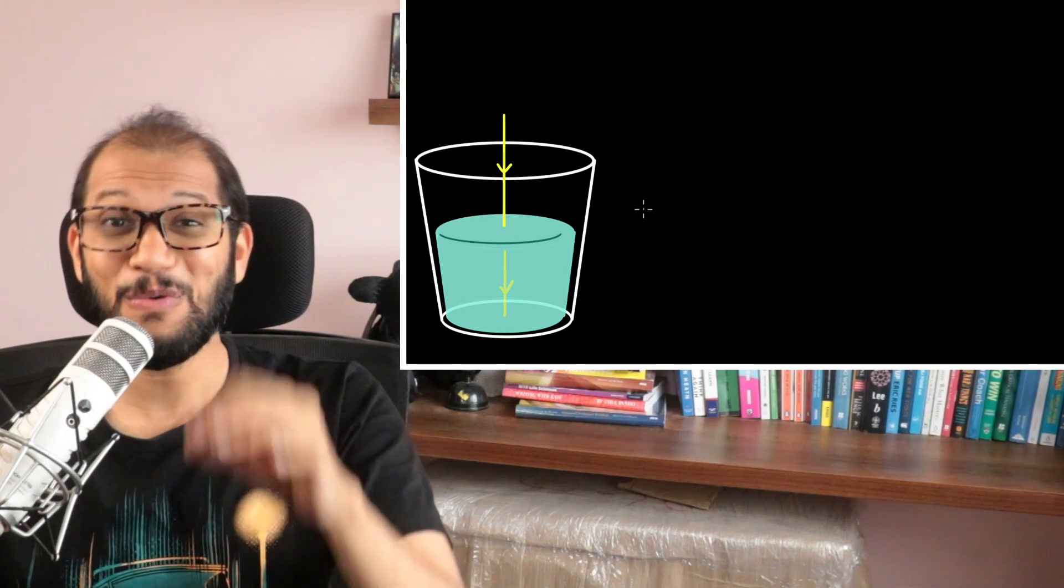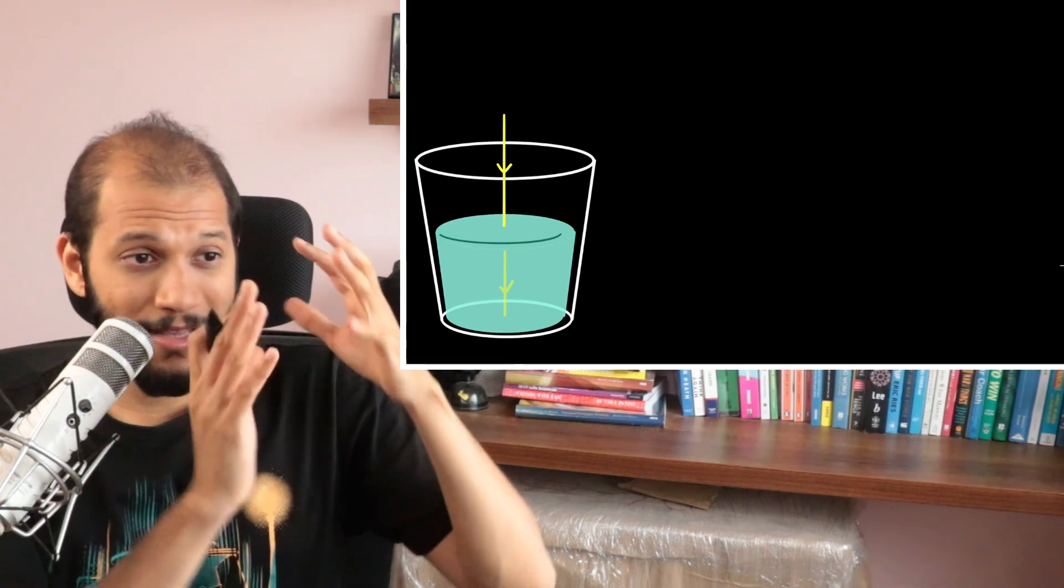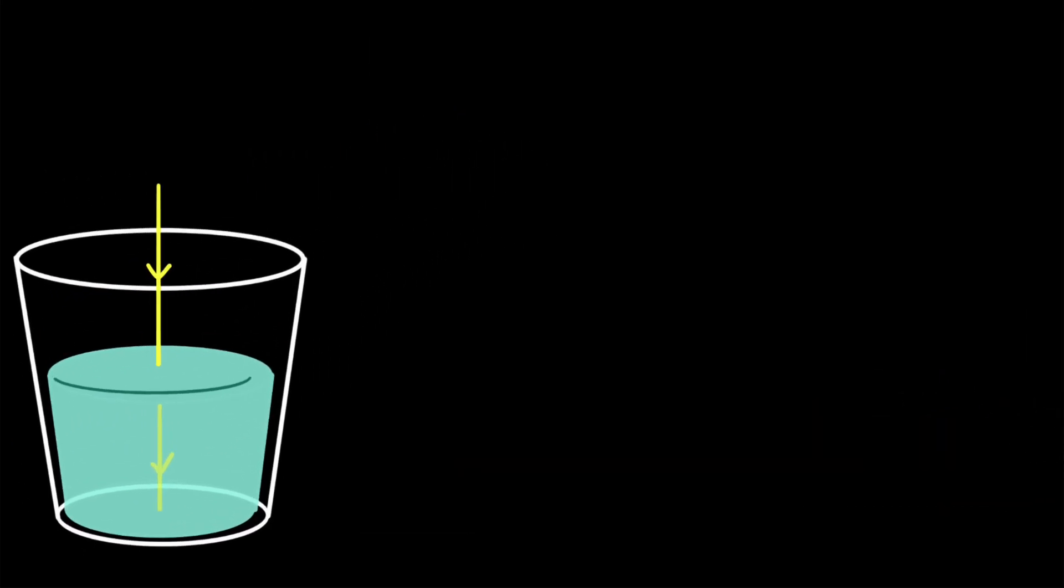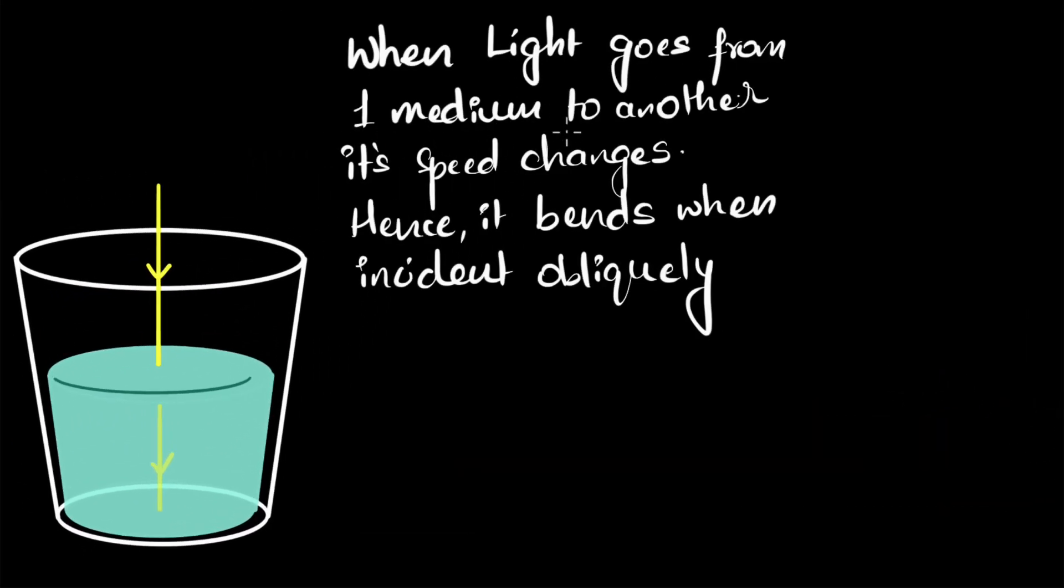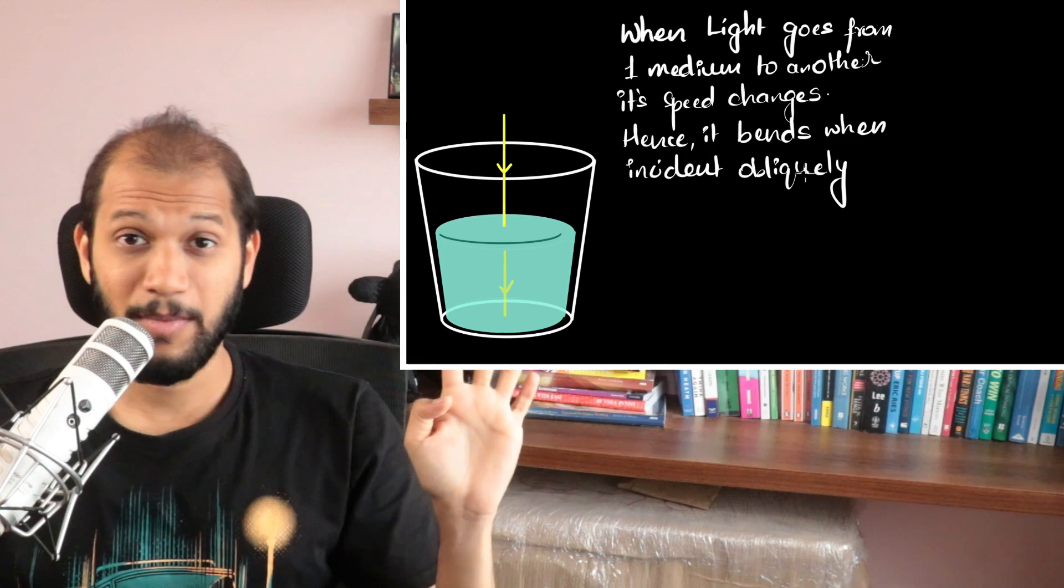And in this video, I want to talk about why I disagree with that. Let's first get something straight. The disagreement is not in the underlying physical phenomena. When light goes from one medium to another, its speed changes, because of which it bends when incident obliquely. And I think we all agree on that. No disagreement over here.